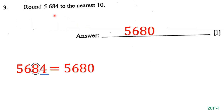The next question says: round 5,684 correct to the nearest ten. The tens place is 8, so we circle 8 and underline 4 to its right. Since 4 is less than 5, we do not round up — 8 stays the same. We change the 4 to 0. The answer is 5,680.